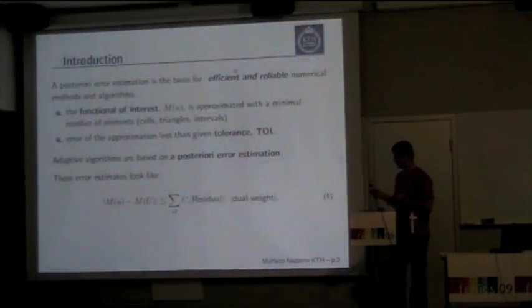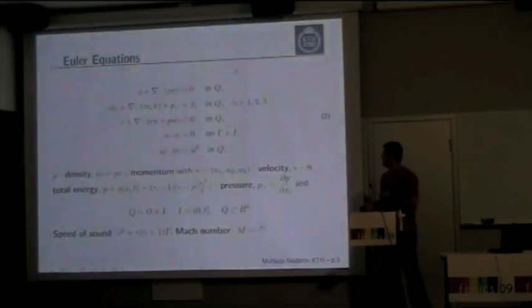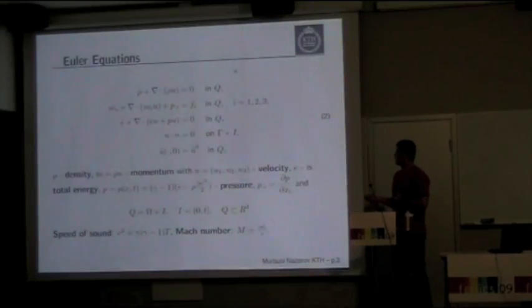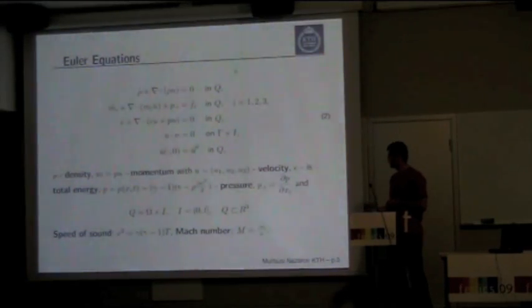Here is the model equation: conservation of mass, momentum, and energy. We use slip boundary condition where the normal component of velocity equals zero on all boundaries, and initial condition is given. This is momentum, rho is density, and total energy. We are going to calculate this equation in some domain Q from R3.